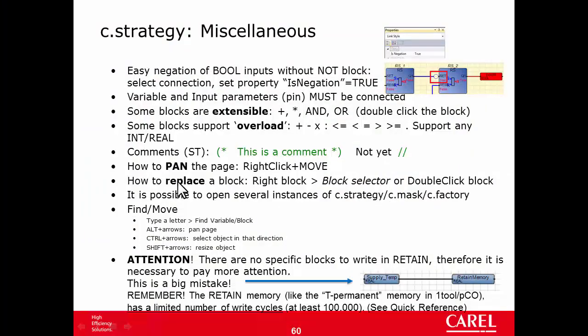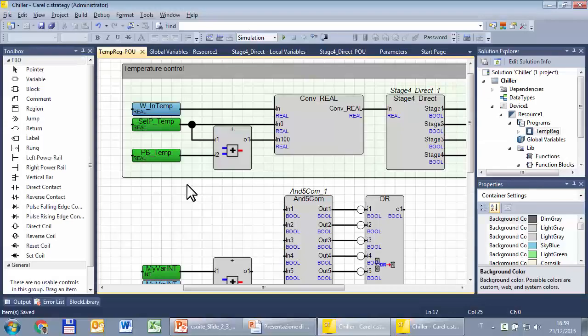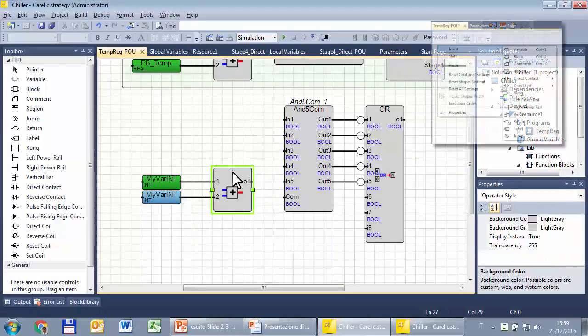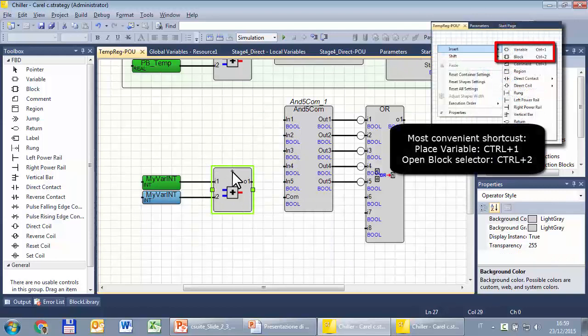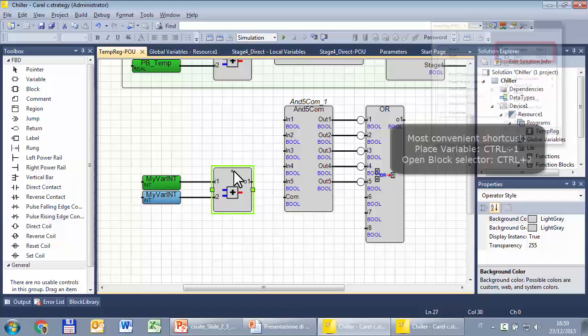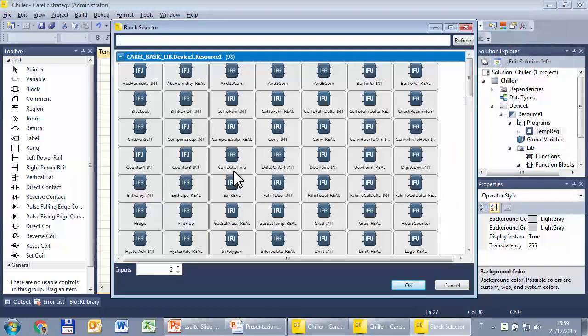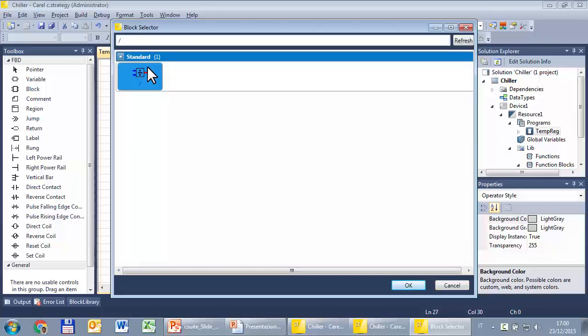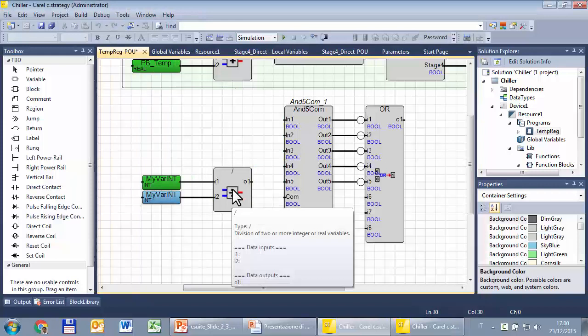Next, how to replace a block. Simple. If you have to replace the ADD with a division, for example, you can right click, block selector or double click. Select the new block from this grid as well as with a filter. Double click. And this is the result.